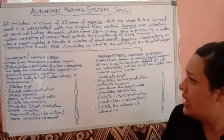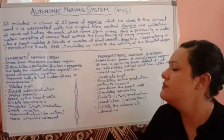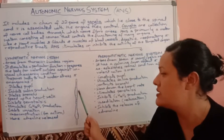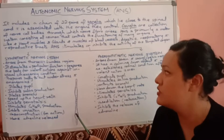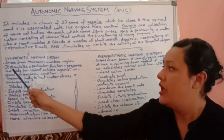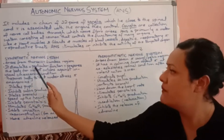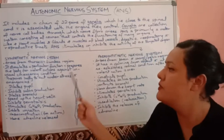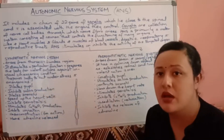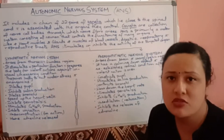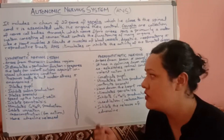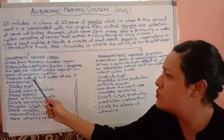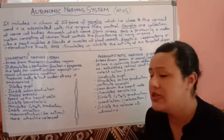The sympathetic nervous system arises from the thoracic and lumbar regions of the spinal cord. Its function is to stimulate and initiate activity — it prepares the body for violent action under unusual conditions, emergencies, or incidents. It prepares the body to act under stress and emergencies.